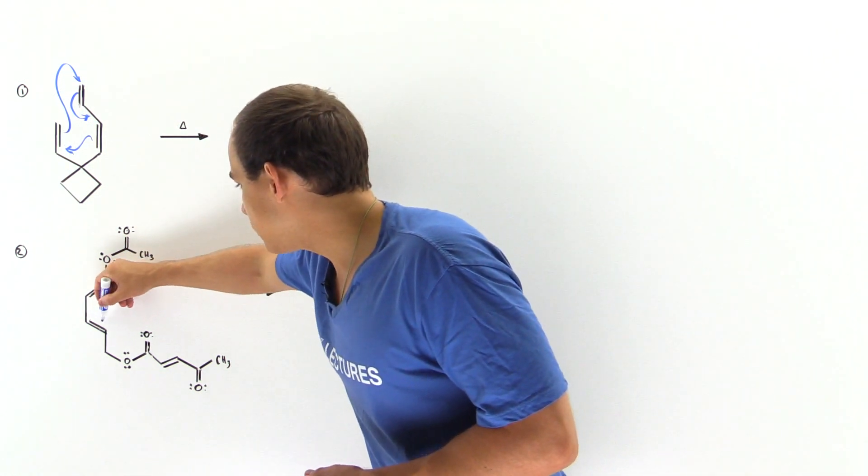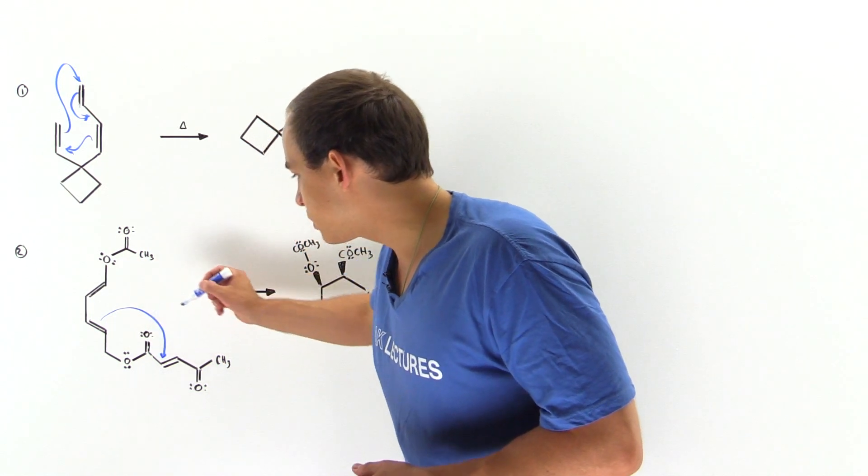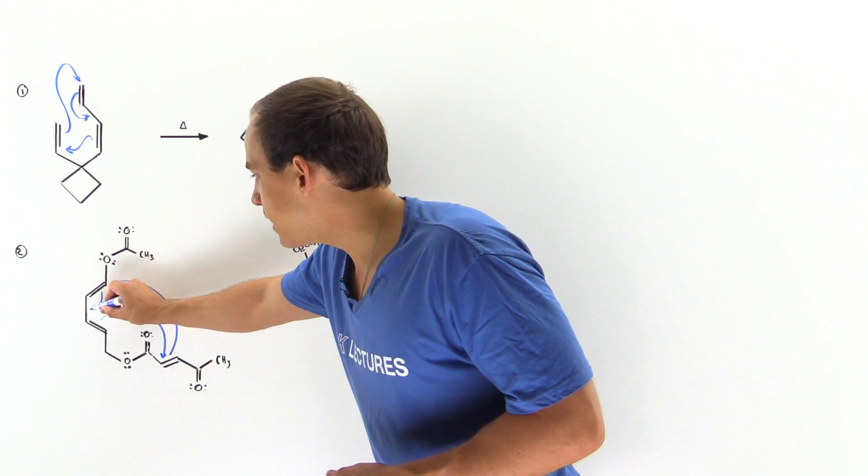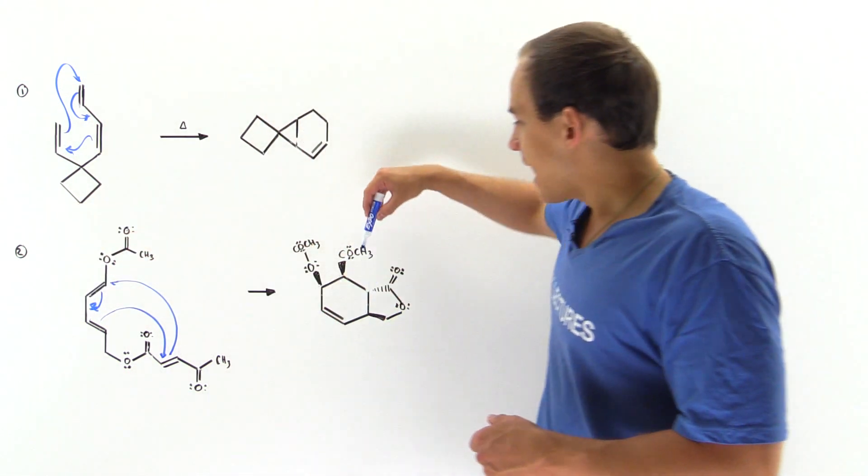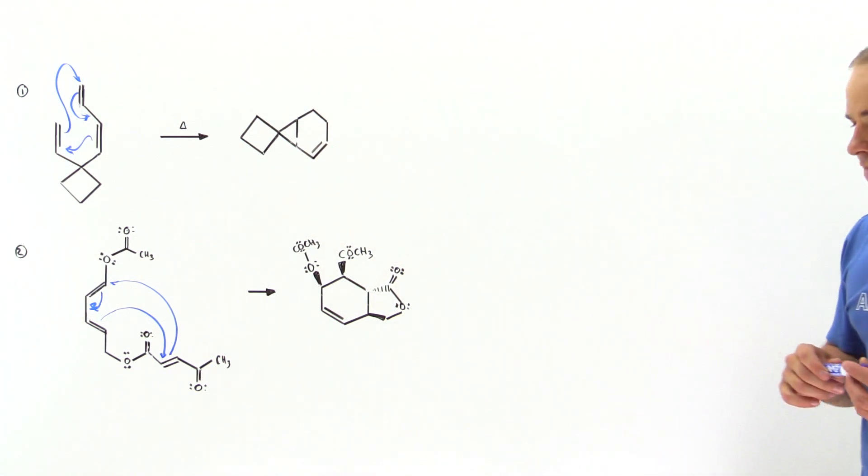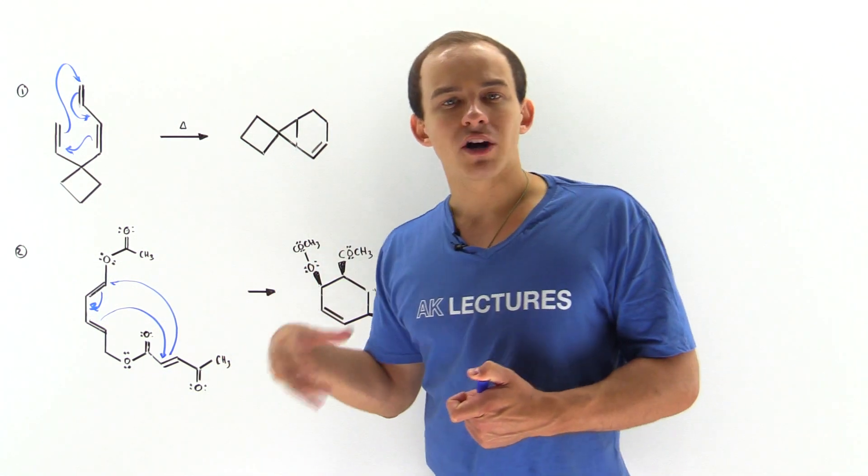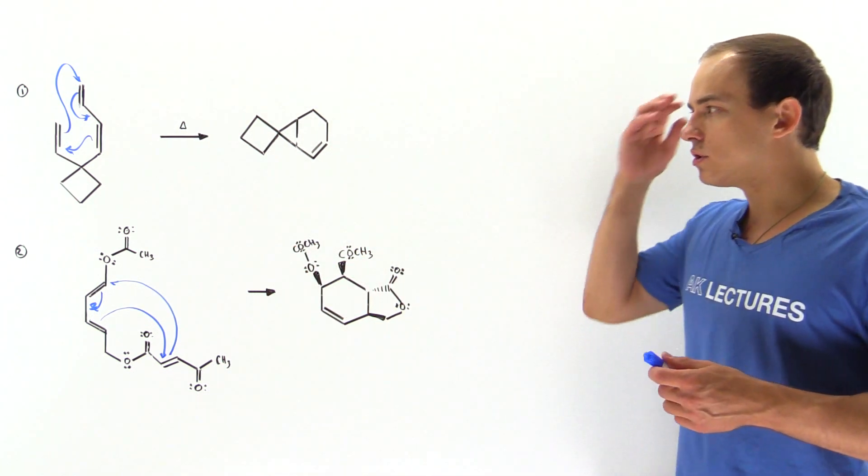We have this bond here that attacks this carbon. Then the pi bond here attacks this carbon and this rearranges and forms a pi bond here. And we have the formation of the following product. So both of these reactions are examples of intramolecular internal Diels-Alder reactions.